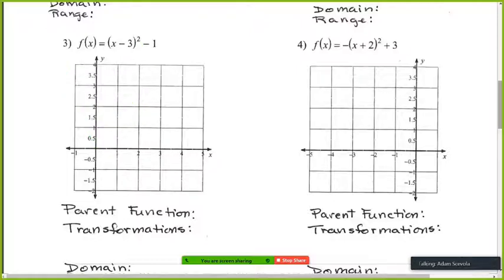So first I would find the vertex. I know that the vertex is usually at zero, zero, right? But then every point gets moved to the right three and down one. So now it's going to be here. So there's my vertex. Now, if I was just doing a quick sketch, I would just go like that, and that'd be done.